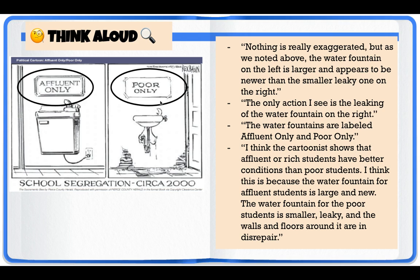We certainly see signs above the water fountains. The sign on the left reads 'Affluent Only,' and on the right, 'Poor Only.' The word affluent means to have money, to have means, to have wealth of some sort. Nothing is really exaggerated in this cartoon. The water fountain on the left is larger and appears newer; the one on the right is smaller and leaking. The cartoonist might be showing that affluent or rich students have better conditions than poor students — a newer, clean, larger fountain versus an older, leaking one with walls and floors in disrepair. This is a think-aloud of our observations and conclusions as we analyze and break down this political cartoon.